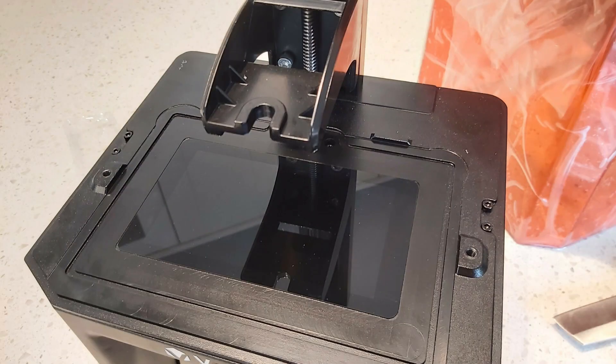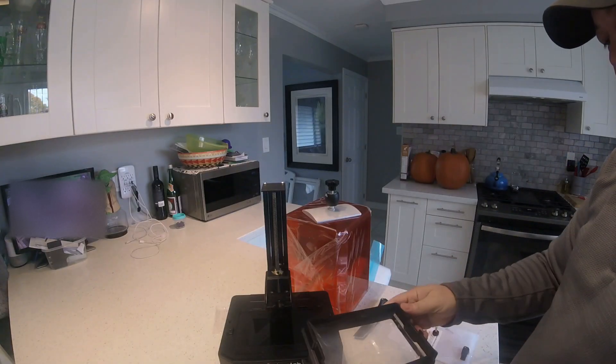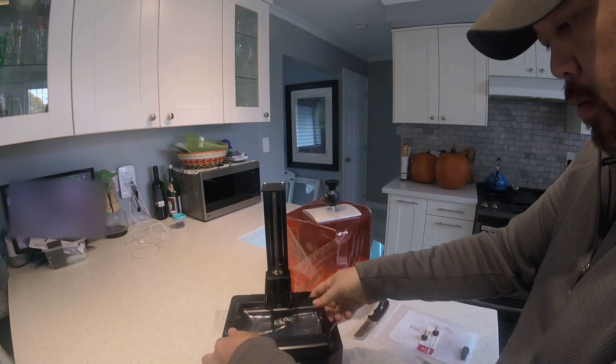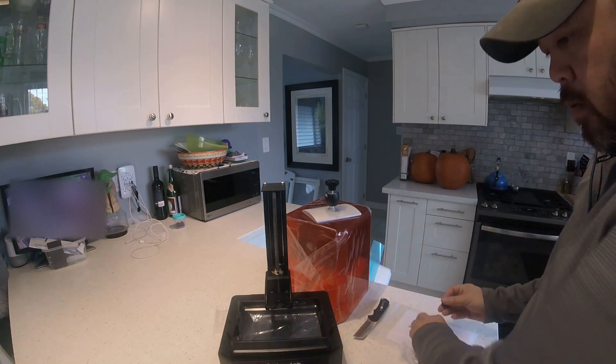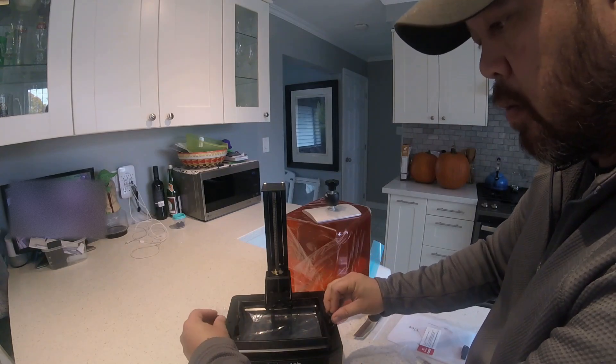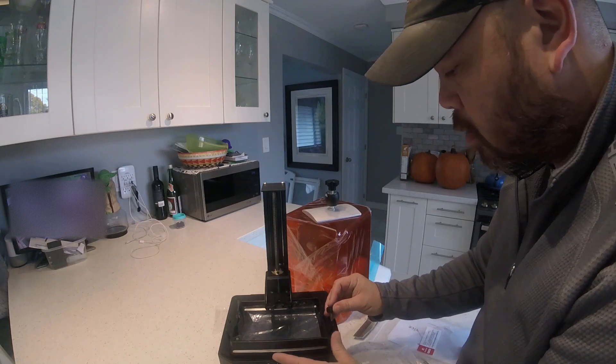Here we see the 2K LCD screen. From what I've been told, it's very uniform in its light. So when it actually shines the UV light through the screen, you get no dead spots. Everything fits pretty well tight. The tolerances are good. The base is made out of metal. It's very well constructed.